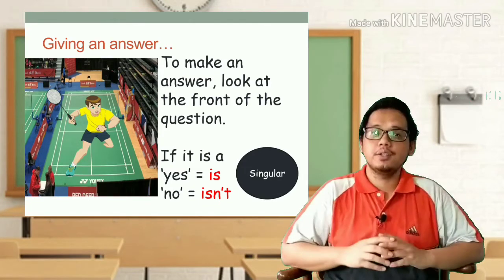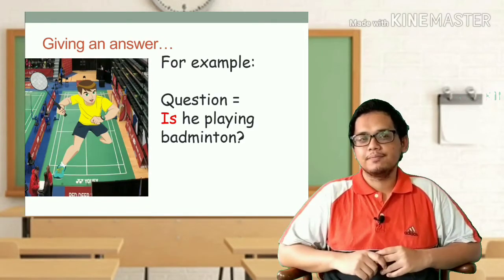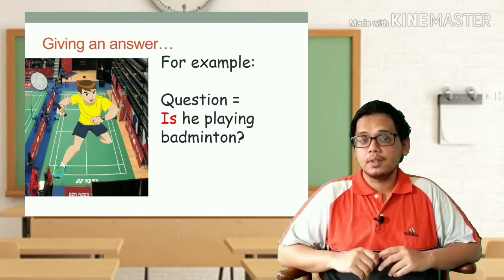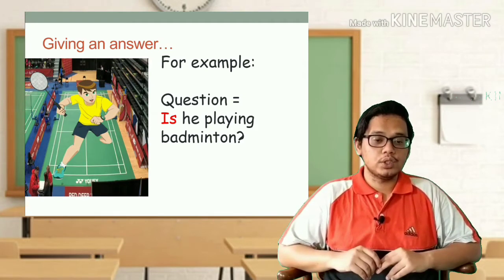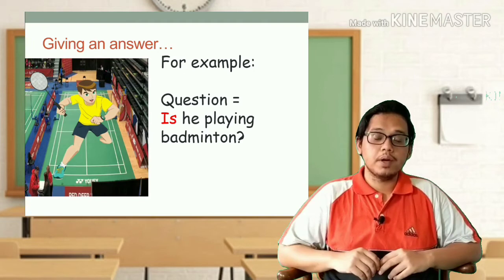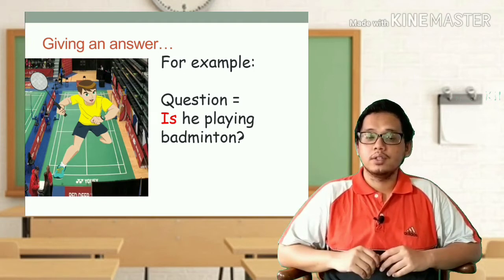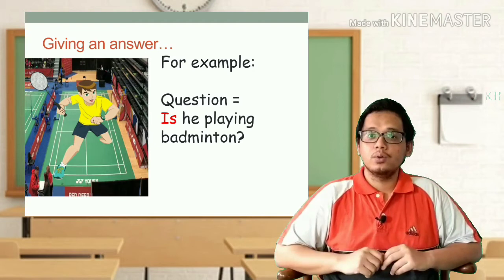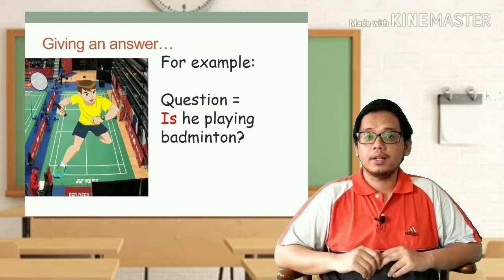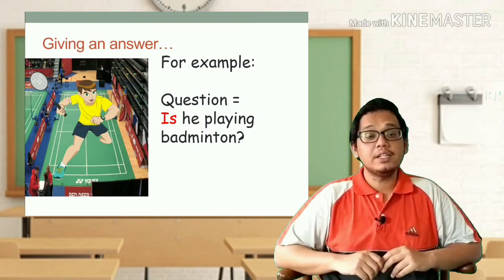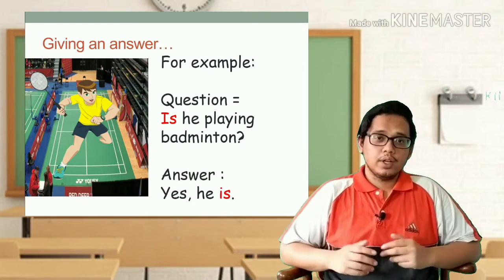Bear in mind that 'is' and 'isn't' are only for singular, which means one. For example, look at the picture. The question is: Is he playing badminton? Before we give an answer, look at the picture — is he playing badminton? Yes, of course he is playing badminton. So the answer is: Yes, he is. We put yes or no first, and then put 'is' at the back because the answer is yes.